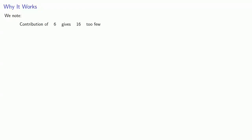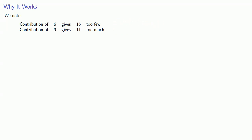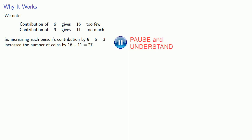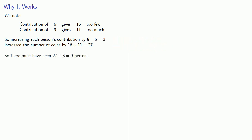Why does this work? A contribution of six gives sixteen too few — there's our deficit — while a contribution of nine gives eleven too much — there's our excess. The thing to notice is that increasing each person's contribution by nine minus six, by three, increased the total number of coins by sixteen plus eleven, that's twenty-seven. So there must have been twenty-seven divided by three, nine persons.